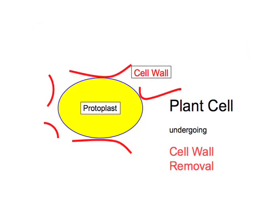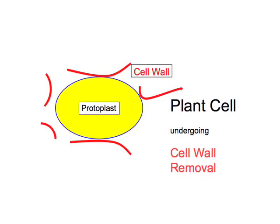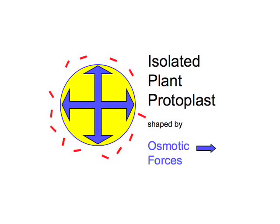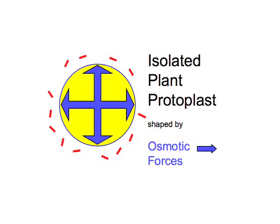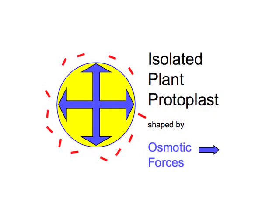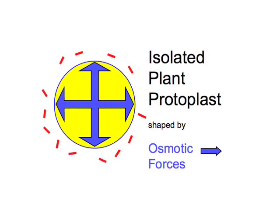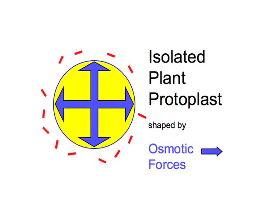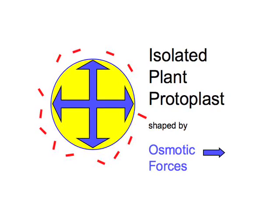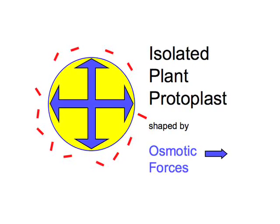Since the shaping force of the wall is missing, the naked cell changes its shape. Isolated plant protoplasts are usually perfectly spherical in shape as a result of non-directional osmotic forces and a largely homogeneous elasticity of the plasma membrane.